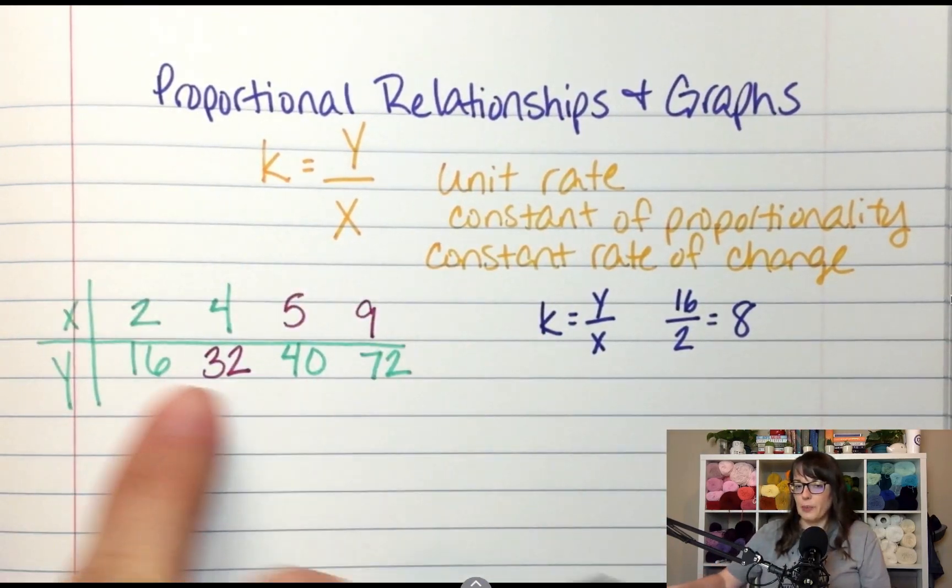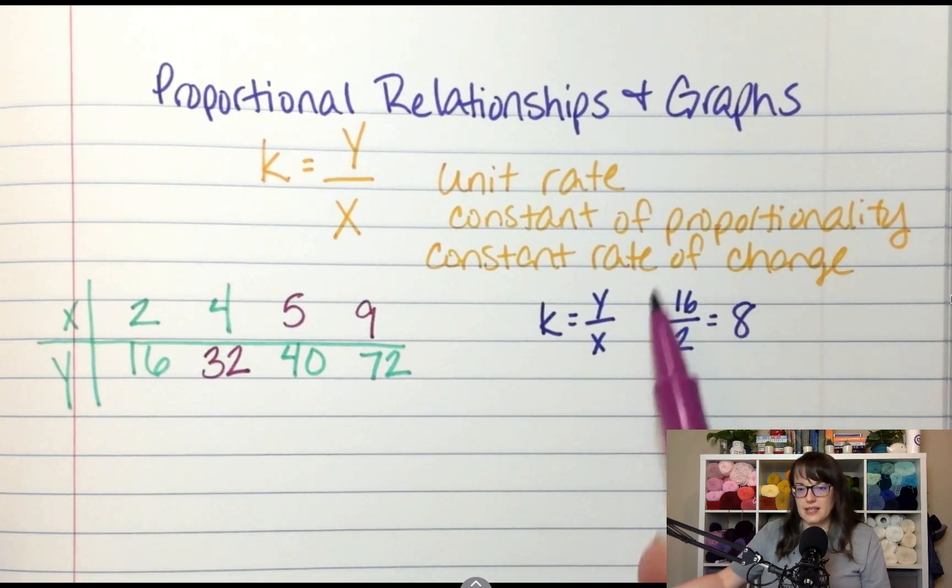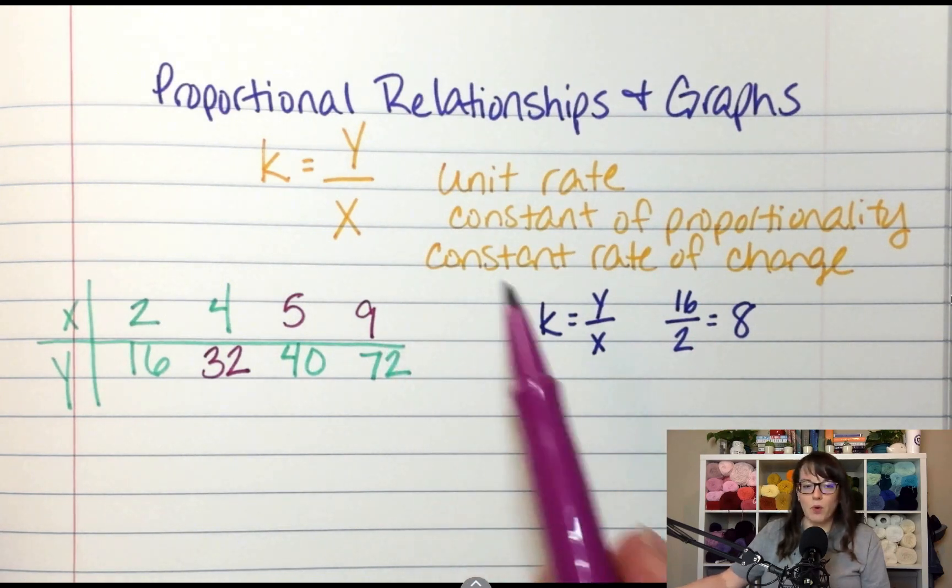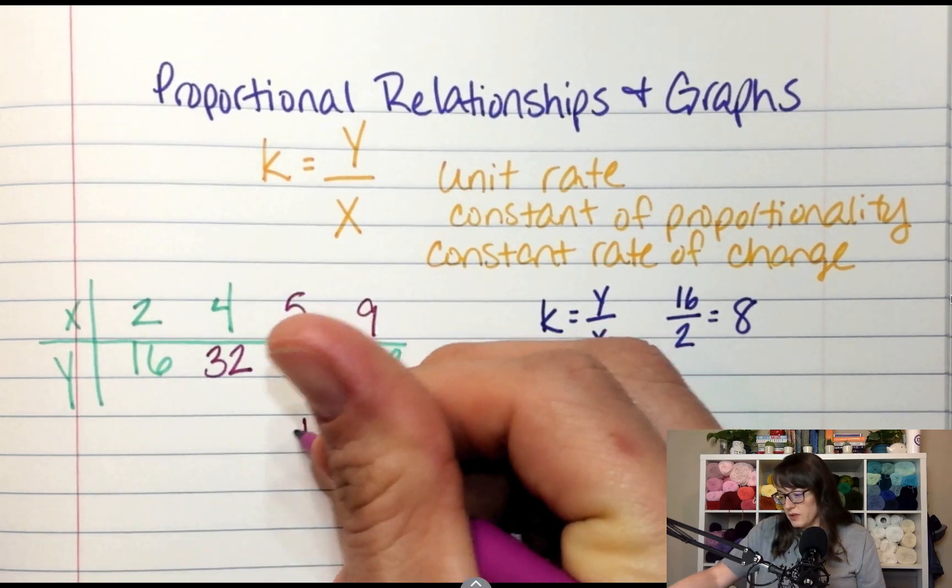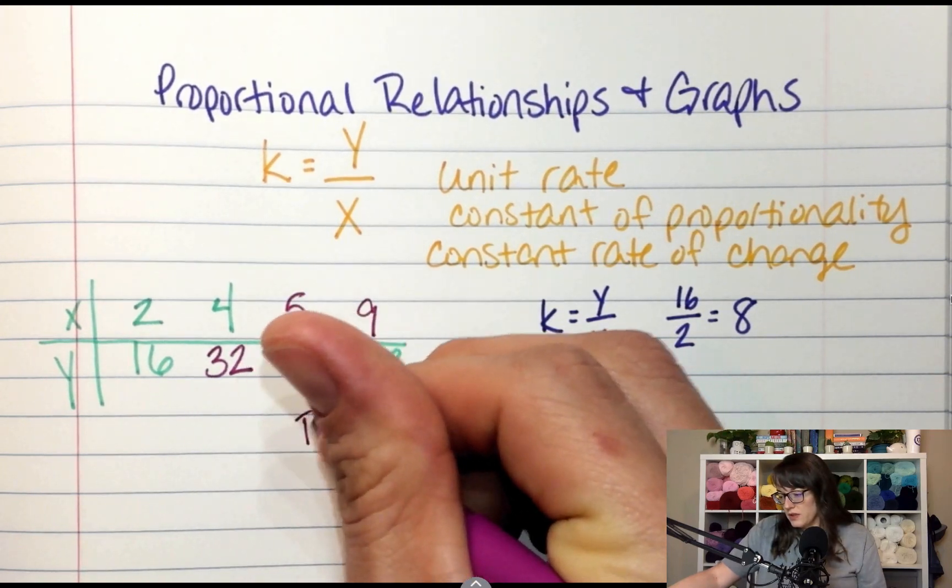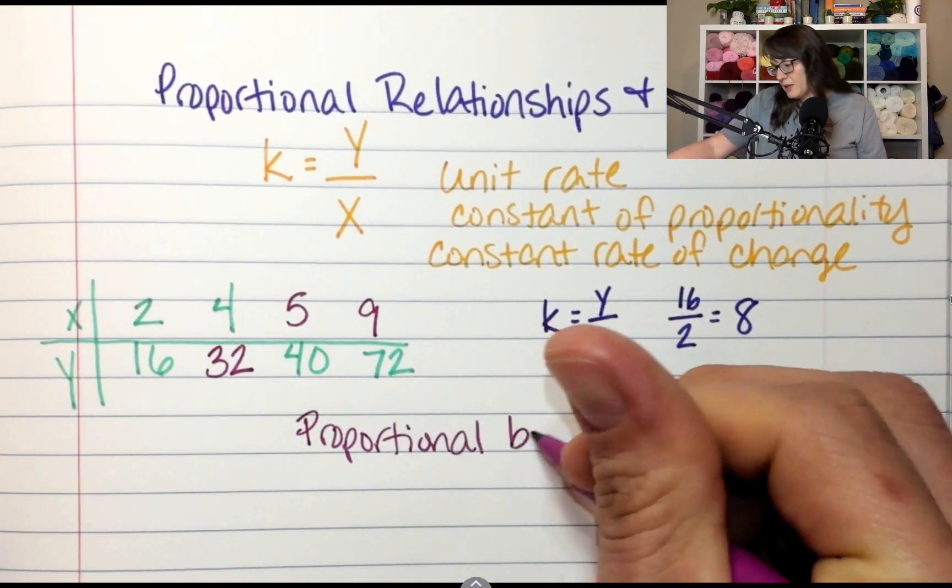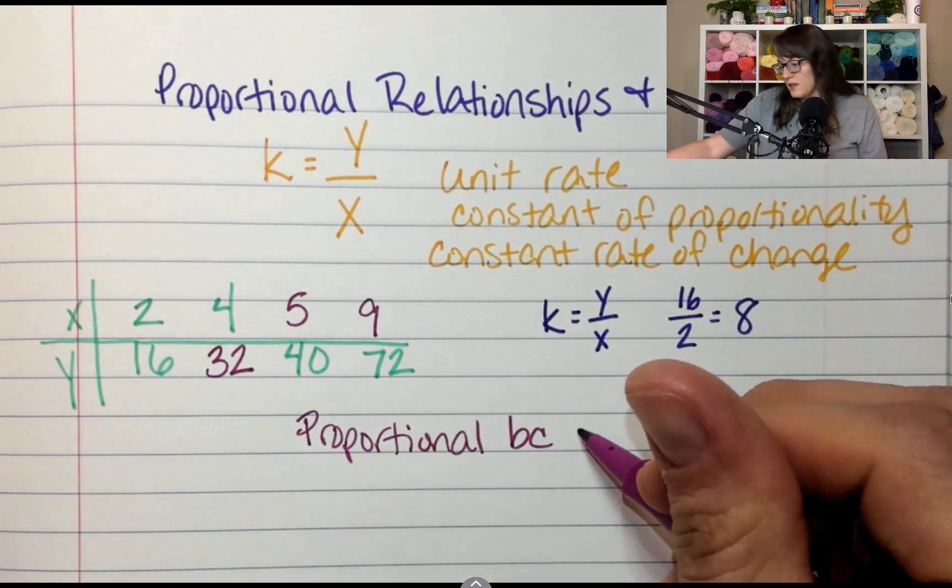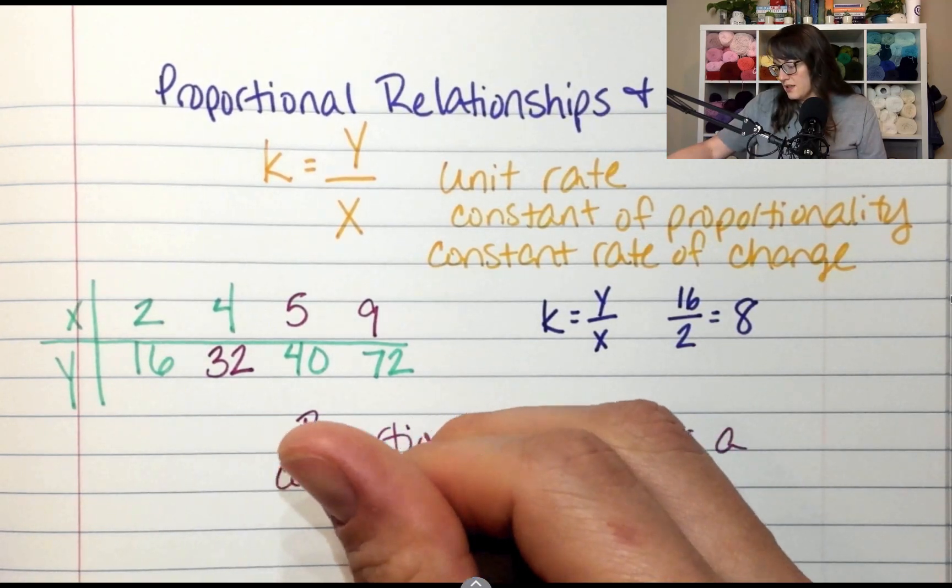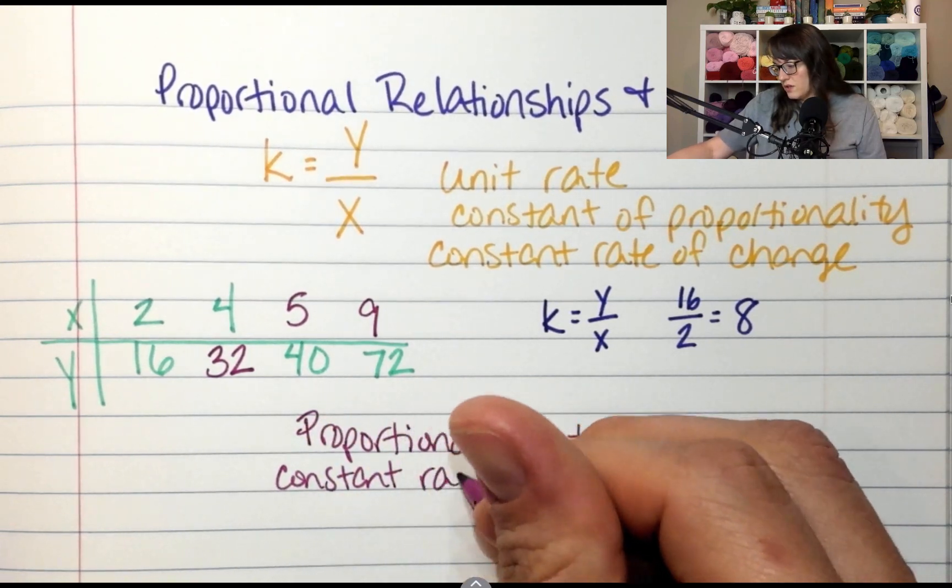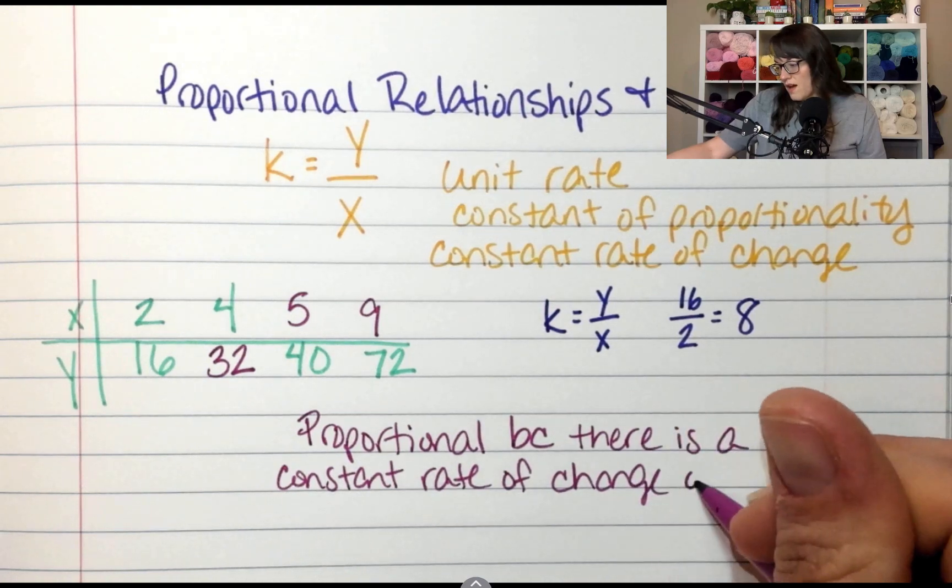Is this a proportional relationship? Yeah, it is because this works. Because I'm only having to multiply to get from x to y. So this is proportional. It is proportional because there is a constant rate of change of 8.